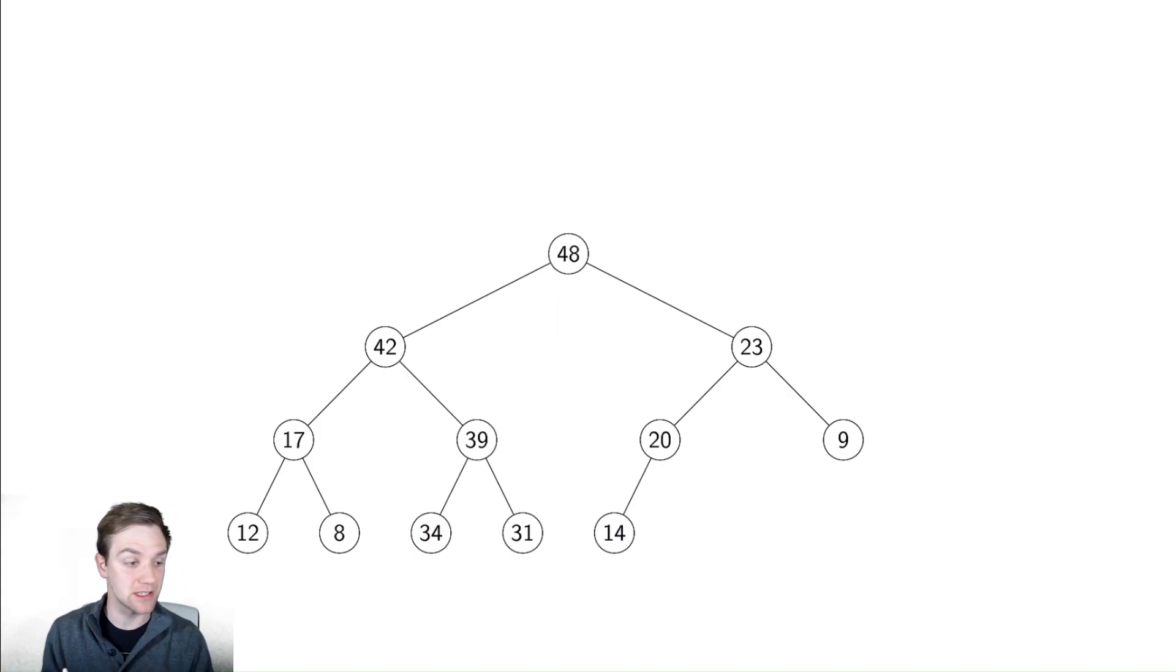We will discuss those later in the class, but in a binary search tree, the left child must always be less than the node and the right child must always be greater than the node. And in this case 42 is less than 48, but 23 is not greater than 48. So we are violating that idea of a binary search tree.